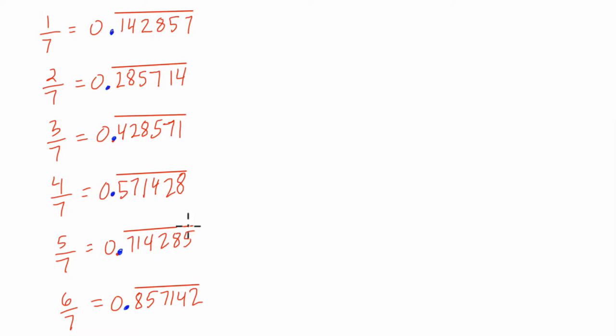Then you might notice they all have these lines above them, and that means they repeat forever and ever. Then you might notice, oh, well, look at that. The repeating pattern for each of them has 1, 2, 3, 4, 5, 6 digits, and they all have 1, 2, 3, 4, 5, 6 digits.